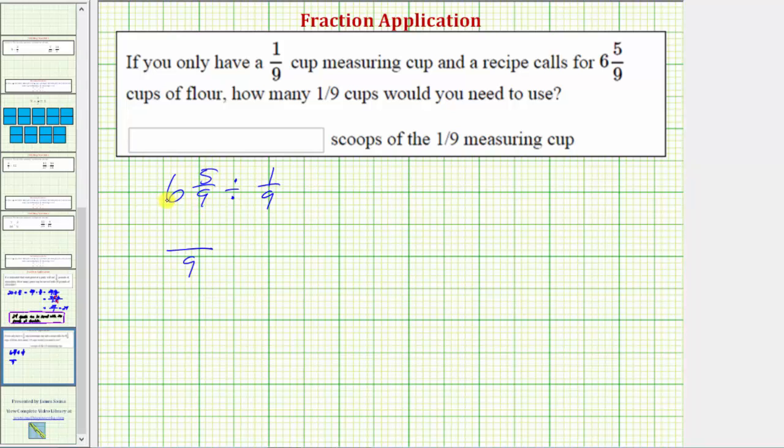Nine times six is equal to fifty-four, fifty-four plus five is equal to fifty-nine. So six and five-ninths equals fifty-nine-ninths.